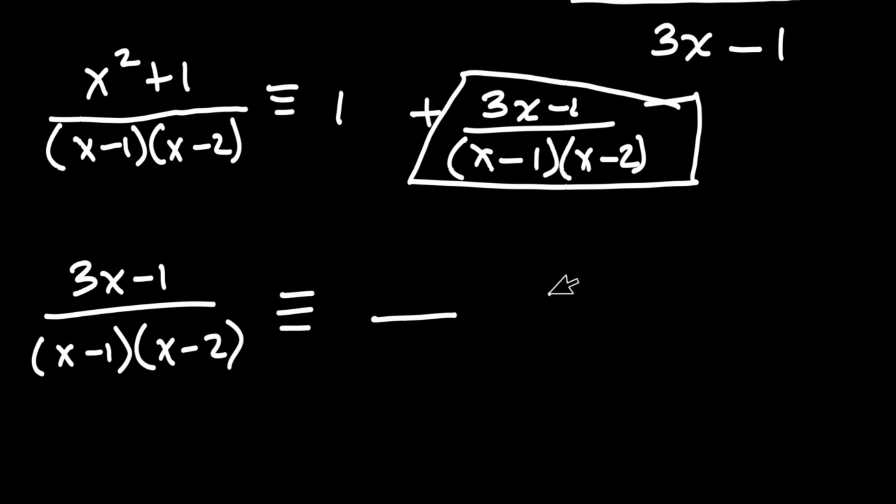Now, in resolving this right here, we are going to end up getting two separate fractions. Now, the first denominator of the first fraction is going to be x minus 1.